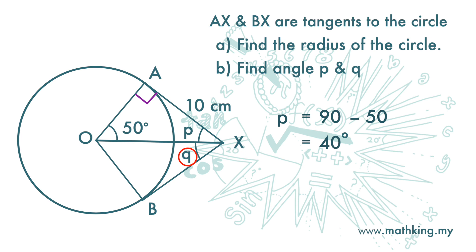Q is also 40 degrees because line OX is a bisector to this angle at X. It divides angle at X into two equal halves.